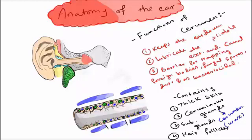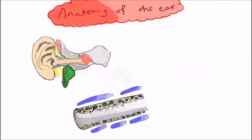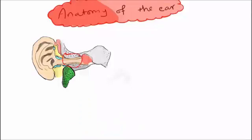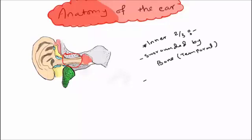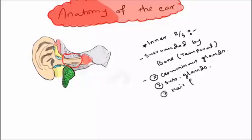Now the inner two-thirds. The inner two-thirds is surrounded by the temporal bone. It is situated in the petrous part of the temporal bone. It contains no ceruminous glands, no sebaceous glands, no hair follicles, and has thin skin.